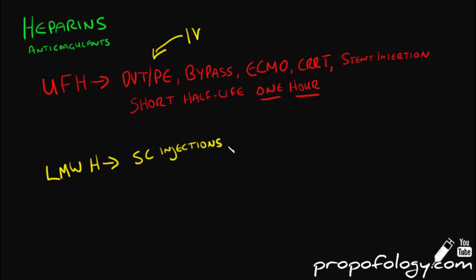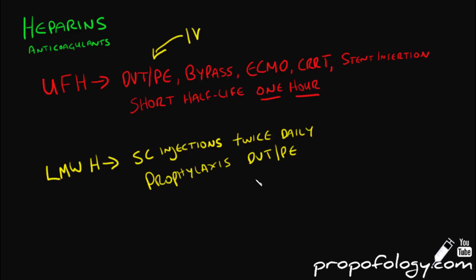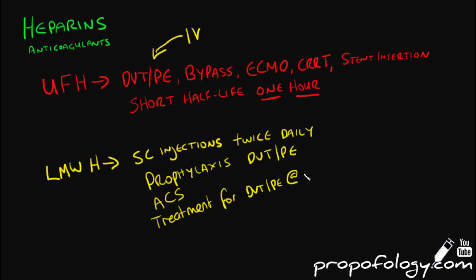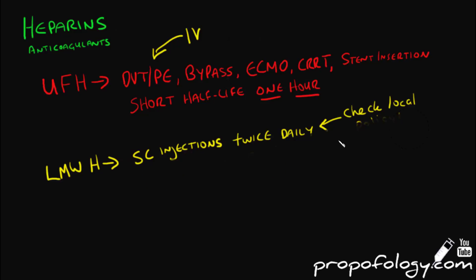Low molecular weight heparins are given as subcutaneous injections, often twice daily for the prophylaxis of DVT or PE. They can also be used in acute coronary syndromes and for the treatment of DVT or PE, usually at higher doses. Check your local policies for the regimes and doses preferred by your hospital, as these can vary significantly. Unfractionated heparin is given as an IV infusion.